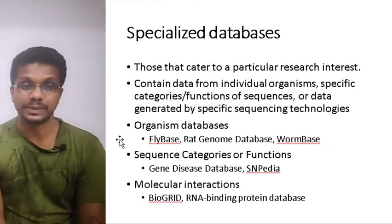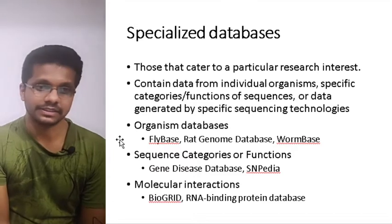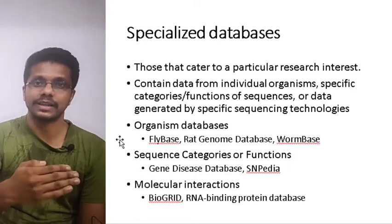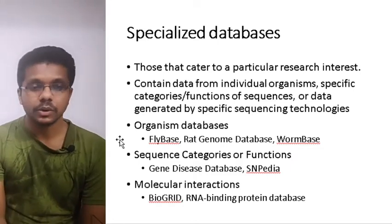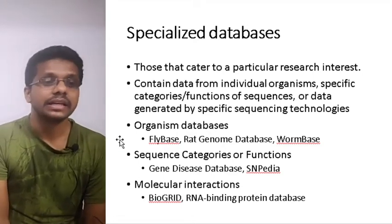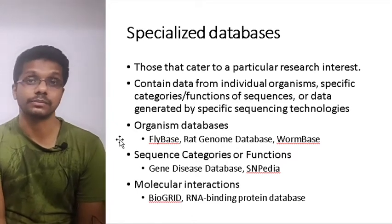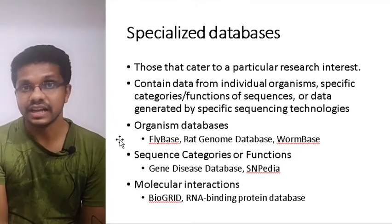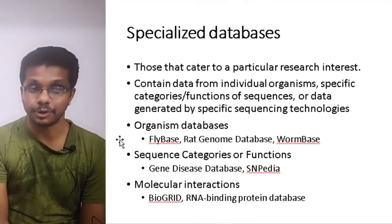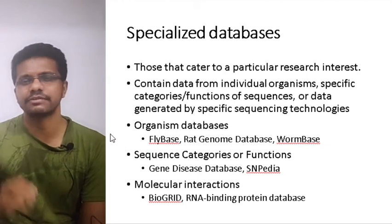Some databases are called specialized databases — they cater to particular research interests. They may be organism-specific, such as FlyBase, which is a database only for Drosophila melanogaster, the rat genome database for rats, or WormBase for C. elegans. They may also be sequence category or function specific, such as gene-disease databases, or SNPDB for SNPs. Molecular interaction databases like BioGRID or the RNA-binding protein database also exist. These are all for special purposes.